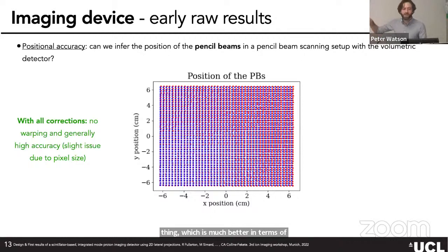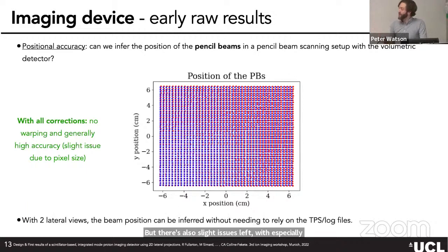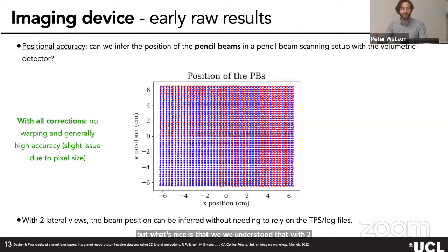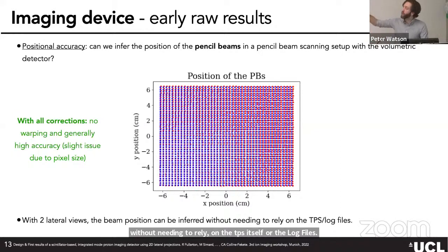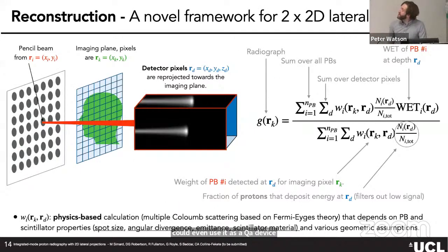The raw data initially gave poor overlay results, which made us understand that we needed to correct for refraction and other optical effects. After all corrections, the quantitative accuracy improved substantially. We also understood that with two lateral views, we can infer the main beam position without relying on the TPS itself or log files — meaning this could potentially be used as a QA device.